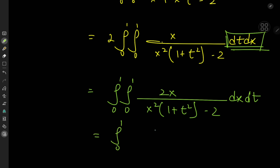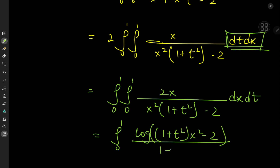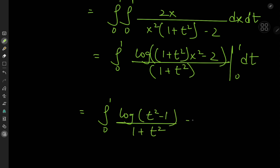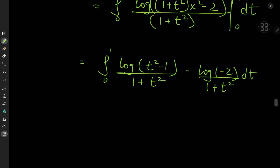The reason we put the 2 back into the integrand is that we now have a nice logarithmic structure for the antiderivative with respect to x. So we get the integral from 0 to 1 of the logarithm of 1 plus t squared times x squared minus 2 divided by 1 plus t squared, evaluated from x equals 0 to x equals 1, dt. As x approaches 1 we get log of t squared minus 1 divided by 1 plus t squared, and as x approaches 0 we get the logarithm of negative 2 divided by 1 plus t squared.